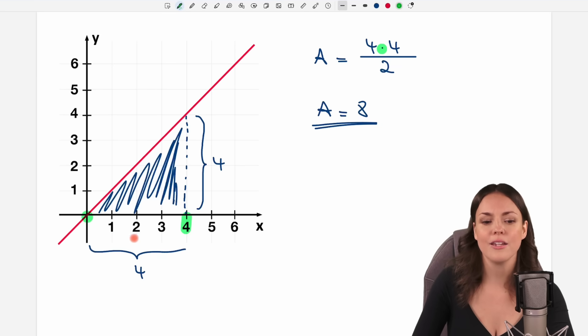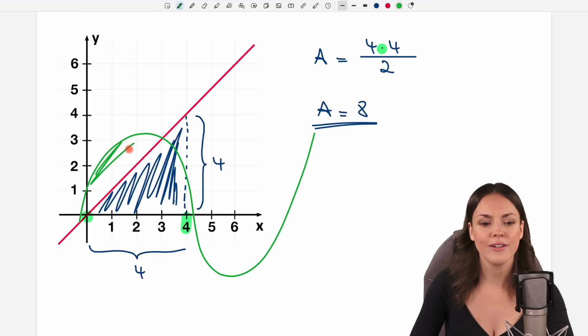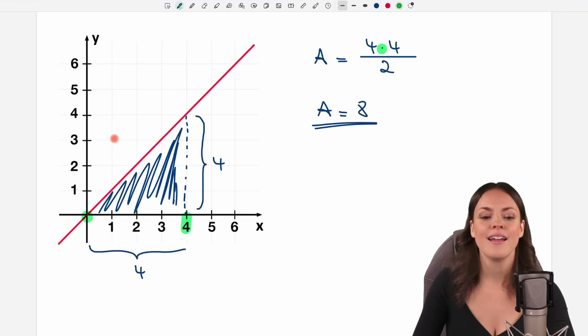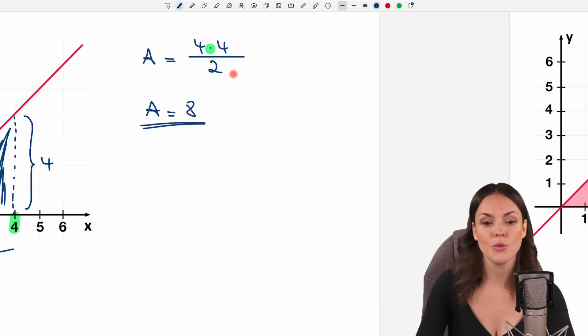But let's say your function doesn't look like this red one, but maybe like this. And we want to find the area between our function and the x-axis. Then it is a little bit more difficult. That is why we need integrals. But I want to show you this specific example using an integral and see if we get the result of 8 as well.